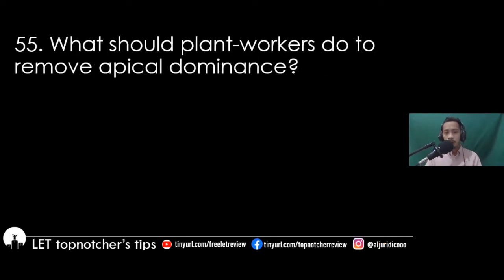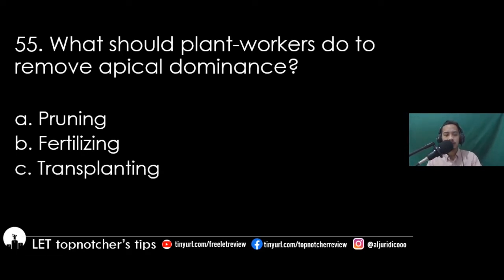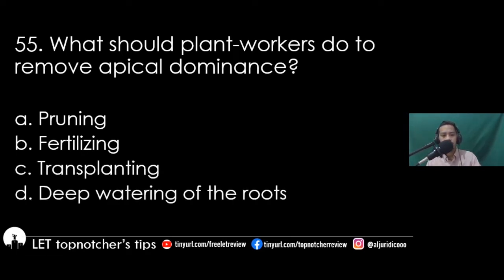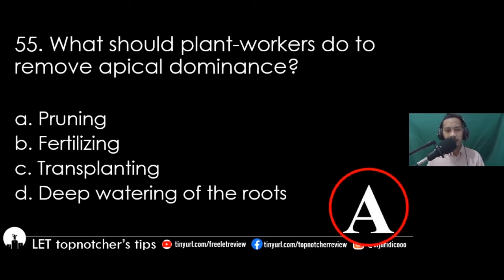Item 55: What should plant workers do to remove apical dominance? A) pruning, B) fertilizing, C) transplanting, D) deep watering of the roots. The best answer is letter A, pruning.